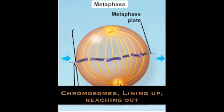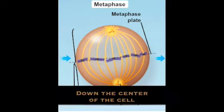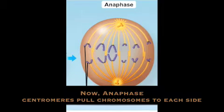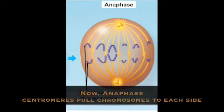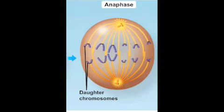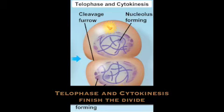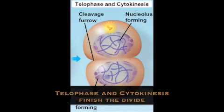Chromosomes lighting up, reaching out down the center of the cell. Now anaphase — centromeres pull chromosomes to each side. Telophase and cytokinesis finish the divide.